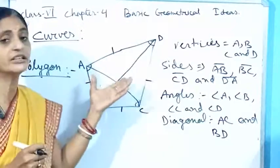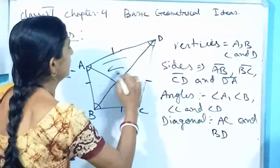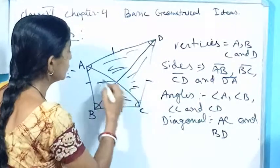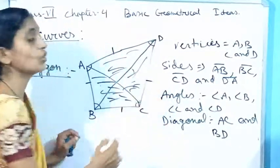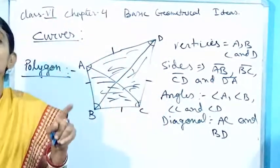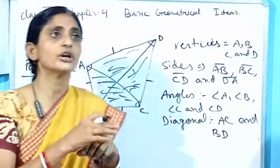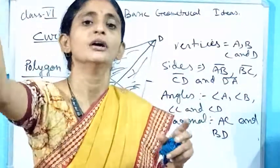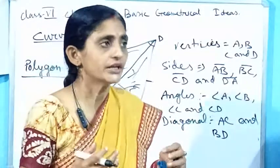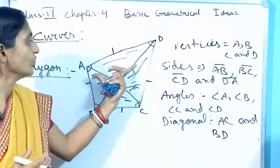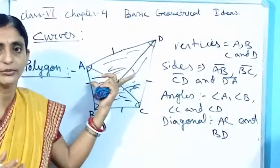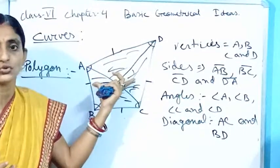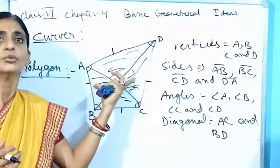When we are talking about interior and exterior, you might be clear about this: the interior part — that region, that whole area — is also called the region of the polygon. When we are going to solve questions in later classes, you should be clear about this term: that interior part is called the region of the polygon.